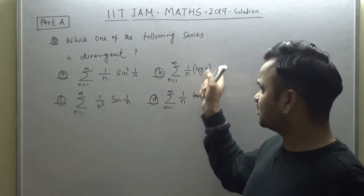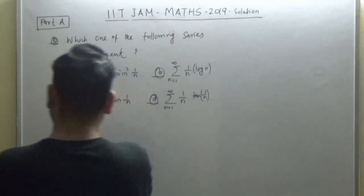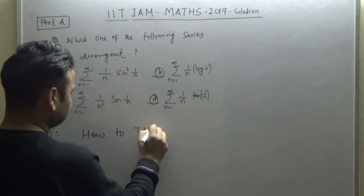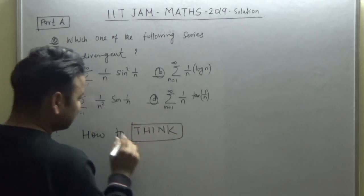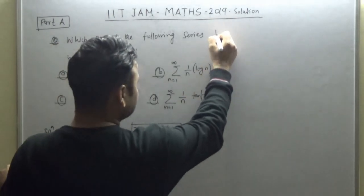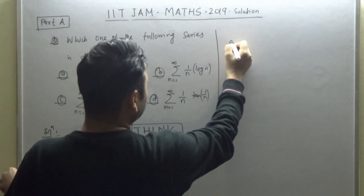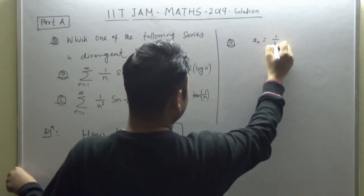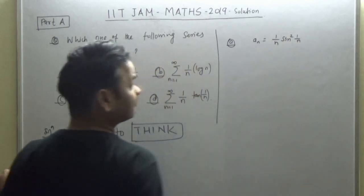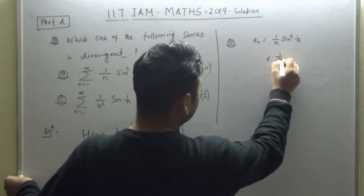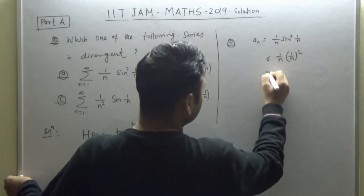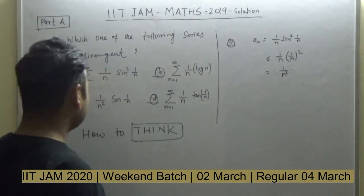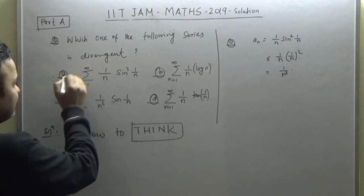If you look at all the terms, all the nth terms are non-negative. So let's see how to approach this. For series (A), the nth term is 1/n · sin²(1/n). Now recall that sin θ ≤ θ, so sin²(1/n) ≤ (1/n)², which means an ≤ 1/n³. So an is dominated by 1/n³, and since that series is convergent, series (A) is also convergent — hence it is not divergent.